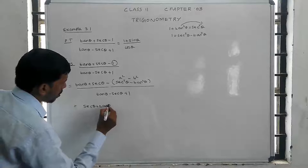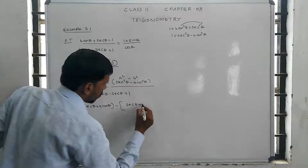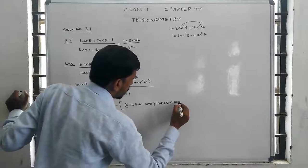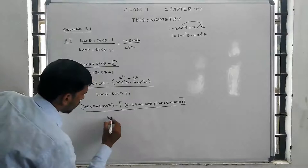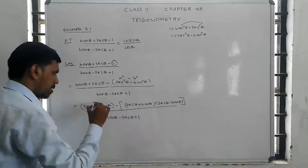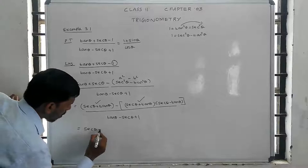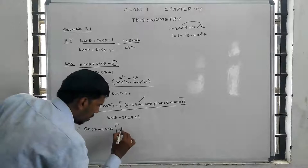We apply the a plus b into a minus b formula. In the numerator, we use secant squared theta minus tan squared theta equals 1, so secant theta minus tan theta is substituted. The whole thing is divided by the denominator: tan theta minus secant theta plus 1. Secant theta plus tan theta is evaluated, giving the remaining expression, minus 1.